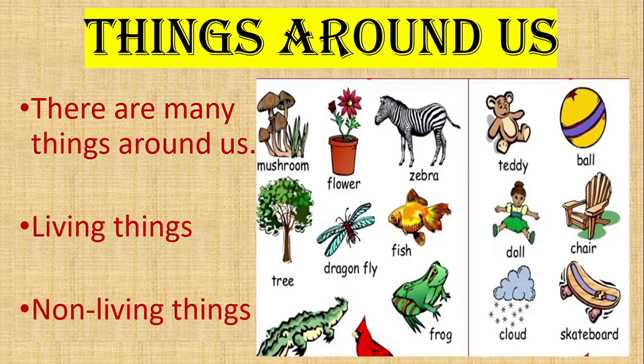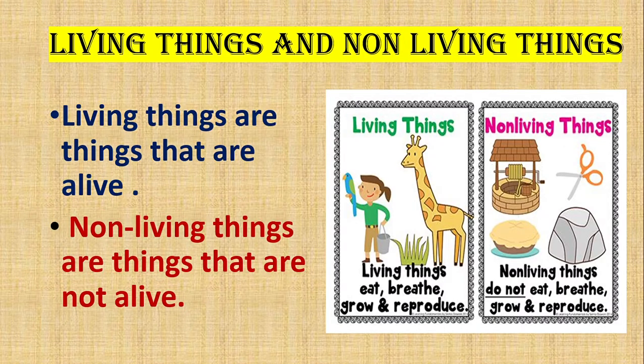There are many things around us. They are grouped as living things and non-living things. Living things are things that are alive. Living things can eat, breathe, grow, and reproduce.